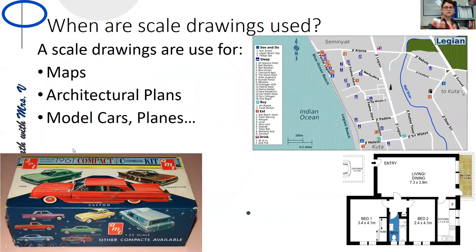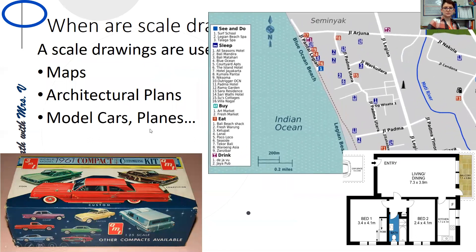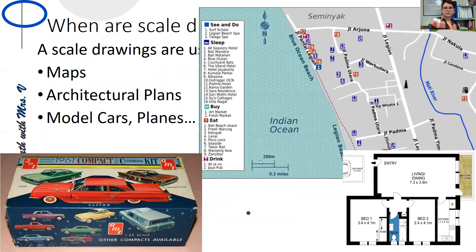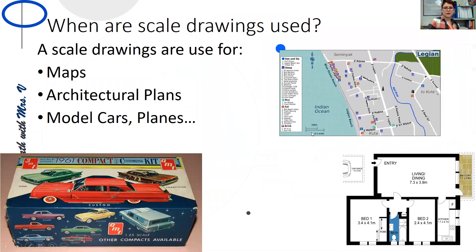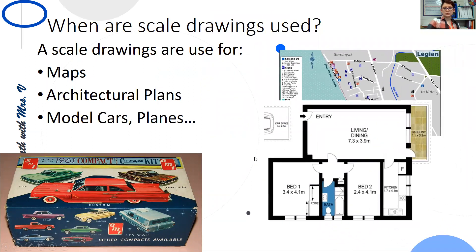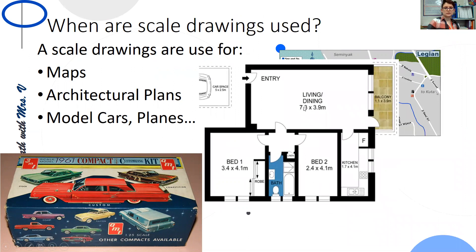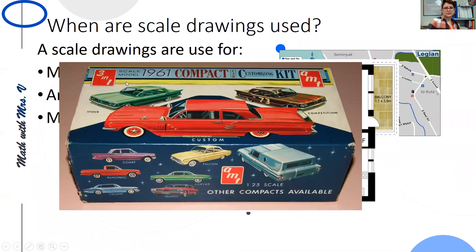So when are scale drawings used in real life? We use them in maps. We can see the scale on the map and architectural plans where we see the dimensions of the building and then model cars. We can see that this particular car is a 1/25th scale. And what a 1/25th scale means is that every one inch on the model car represents 25 inches on the real car it's made after.